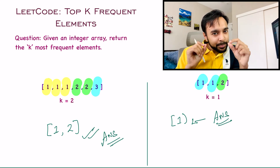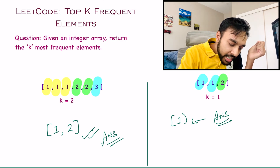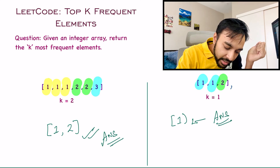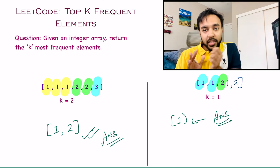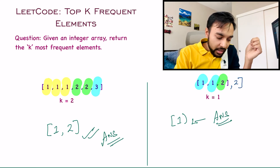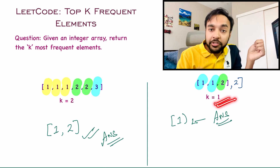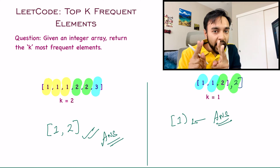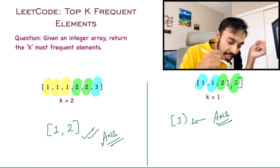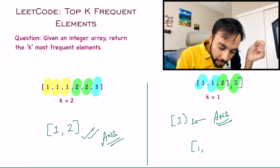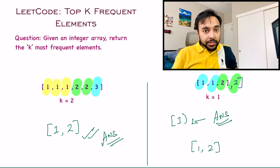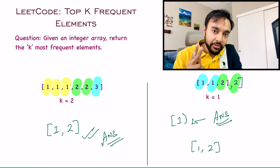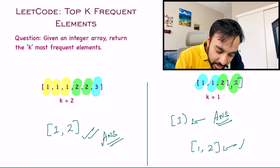But there is a specific catch in this question. Let's say in my original sample array I had one more element two. Now I ask you to tell me the most frequent element. You can see that both one and two are occurring two times. So in that case, your answer would be both one and two, because both elements are the most frequent and both have the same frequency. So then both will be your answer.